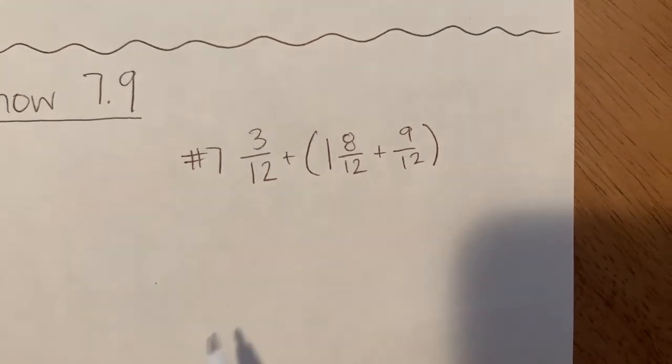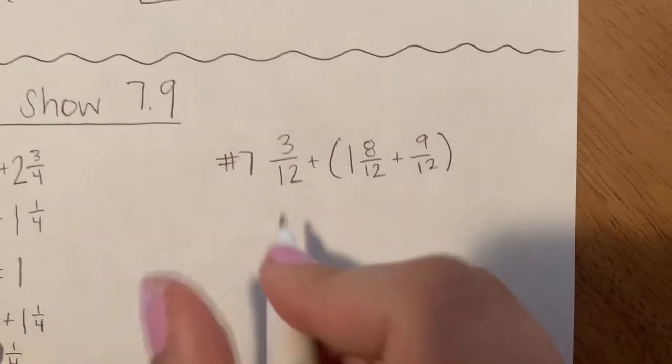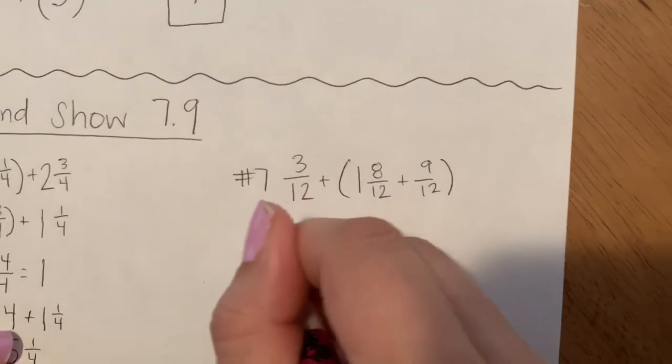So I want this 3 twelfths next to this 9 twelfths. So I'm going to change the order by starting with 3 twelfths.